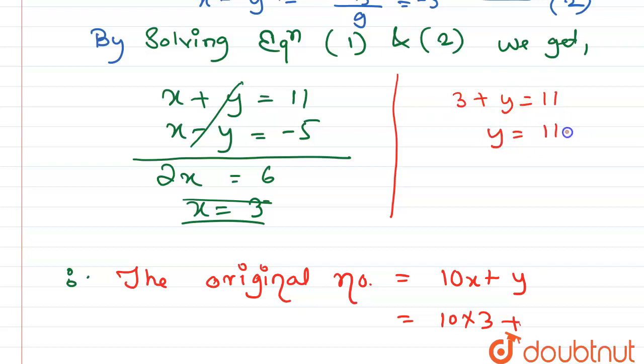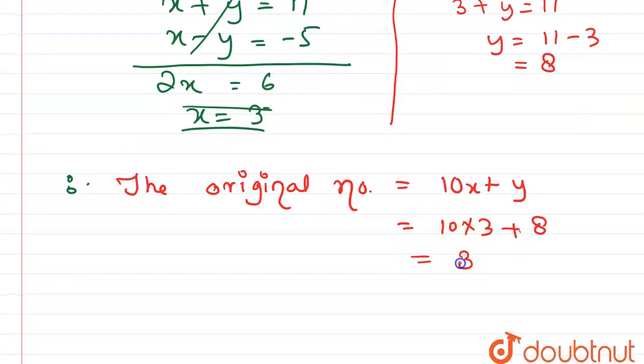So here we write 8. So now this equals 30 plus 8, this equals 38. So here this is the answer. Thank you.